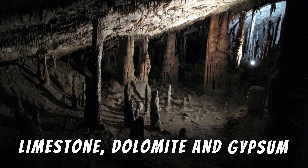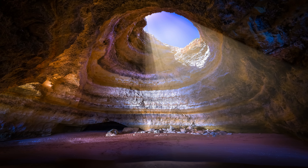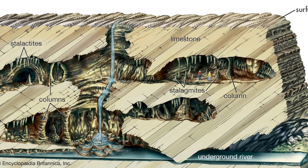Karst is a topography formed from the dissolution of soluble rocks such as limestone, dolomite and gypsum. It is characterized by underground drainage systems with sinkholes and caves. Karst is most strongly developed in dense carbonate rock such as limestone that is thinly bedded and highly fractured.